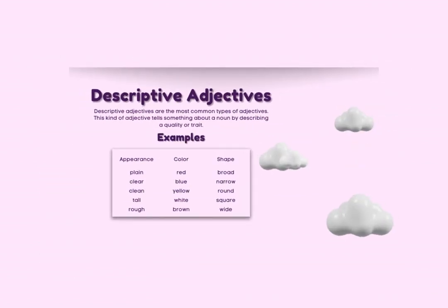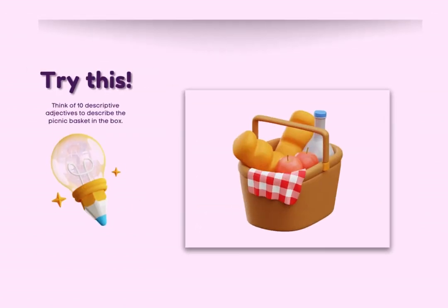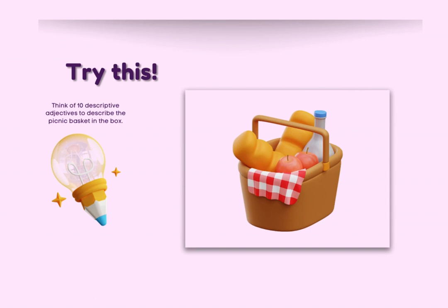Descriptive adjectives are the most common types of adjectives. This kind of adjective tells something about a noun by describing a quality or trait like appearance, color, or shape. These traits are categories. Try this — pause the video and try to think of five to ten words that describe this basket based on size, color, shape, materials used, age, or quantity. Did you use 'woven,' 'wicker,' 'rectangular,' 'tan,' or 'picnic' to describe the basket?